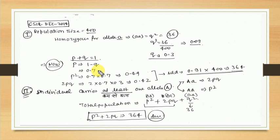If you know p, you can calculate p². Just multiply p by p and you will get p². This is the dominant homozygous frequency, which is 0.49. Then 2pq equals 2 times 0.7 times 0.3, which gives the heterozygous frequency of 0.42.